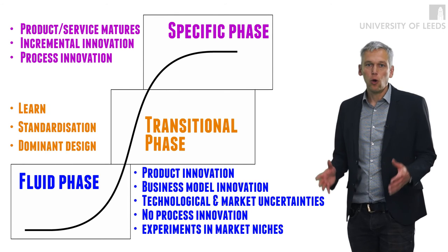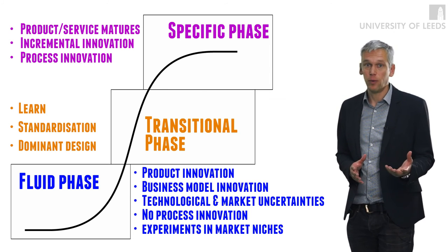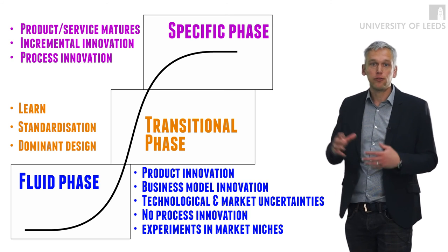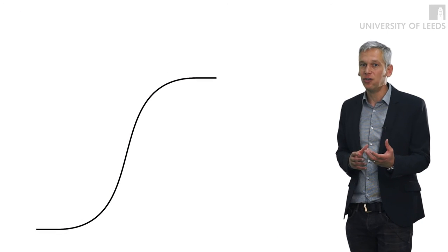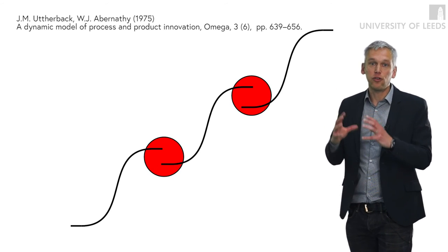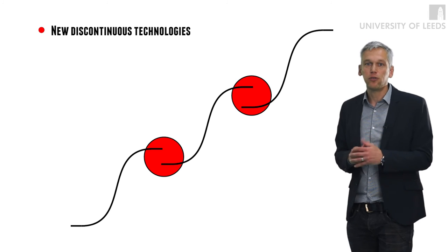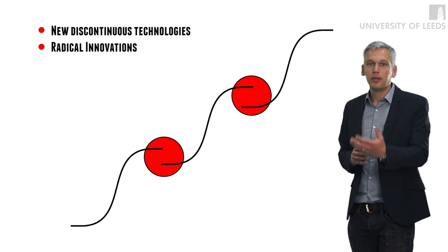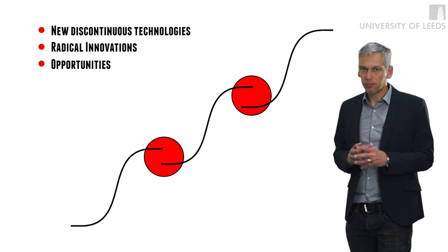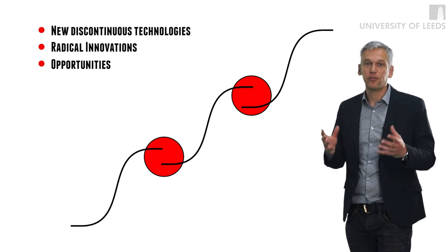These S-curves are also very useful to demonstrate where radical innovation or discontinuous innovation happens. We can see that innovation develops within these S-curves with a lot of incremental innovation. But what is really interesting is when one S-curve is replaced by another one — and this is where we see the red circles. These red circles represent a really big innovation challenge. This is where new discontinuous technologies are coming in, where radical technologies are coming in, and where there are huge opportunities for new entrants or entrepreneurial companies to change the dynamics of competition.